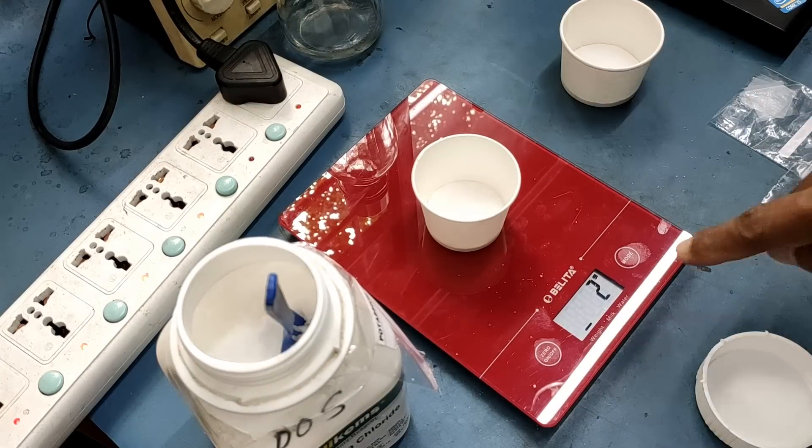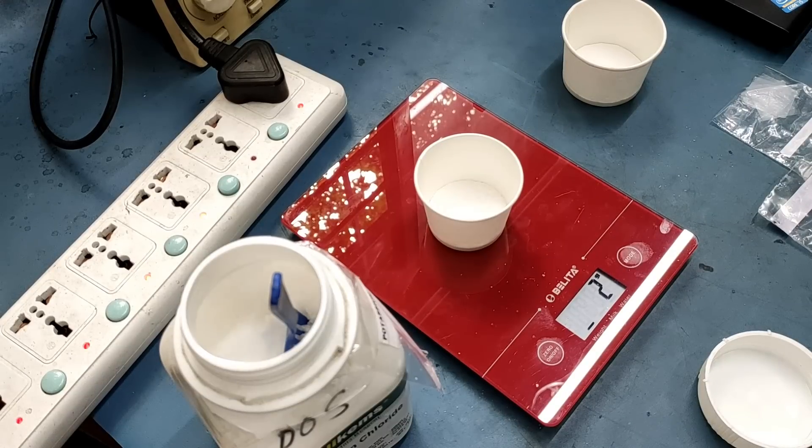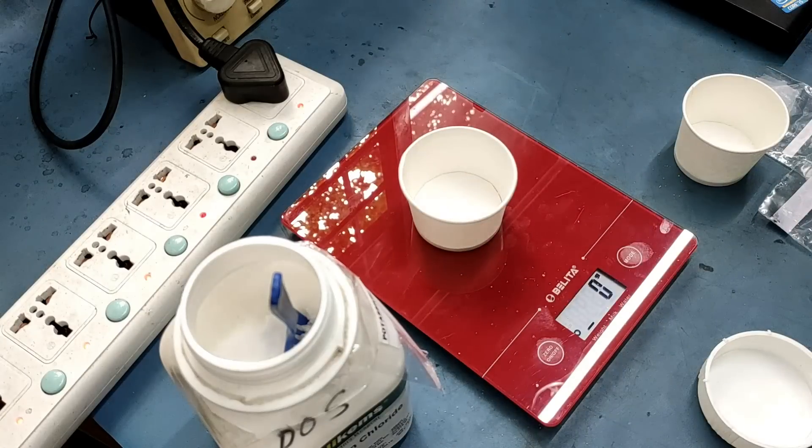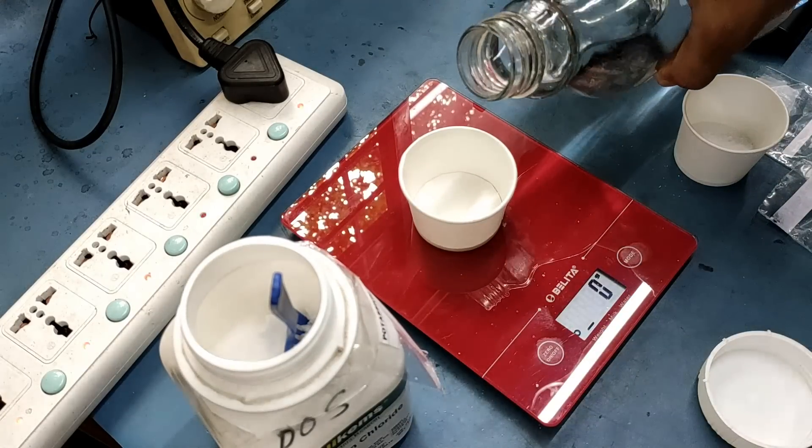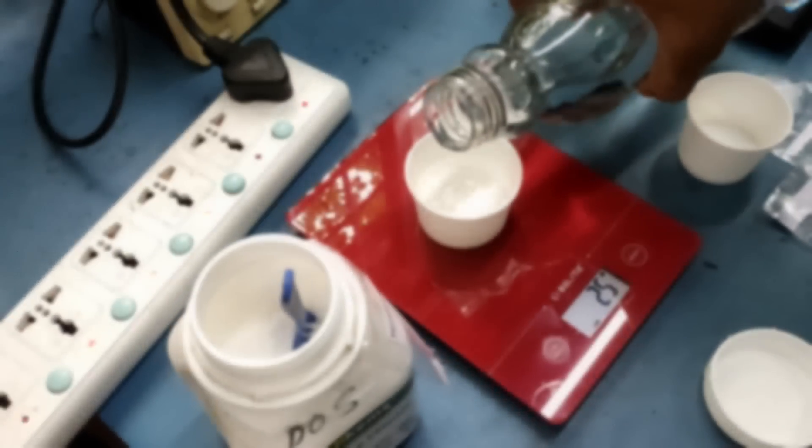Galvanic D.O. sensors consist of two electrodes, an anode made up of silver and cathode made up of gold. Both of these electrodes are immersed in electrolytes inside the sensor body. An oxygen permeable membrane separates the anode and cathode from the measured water.